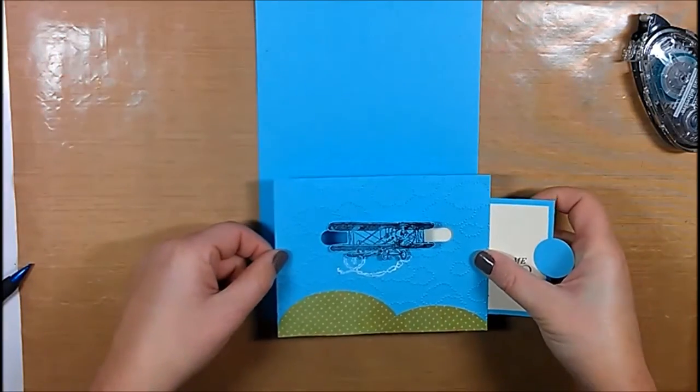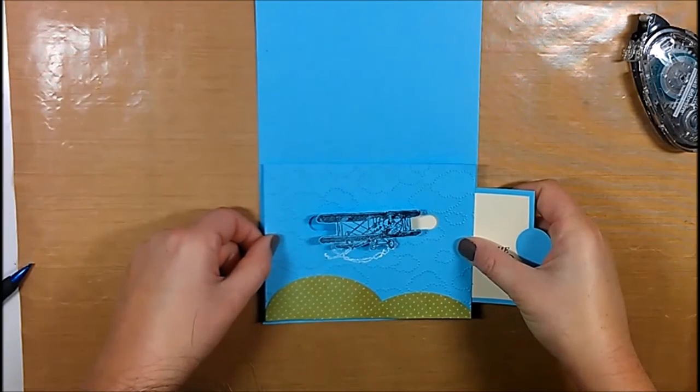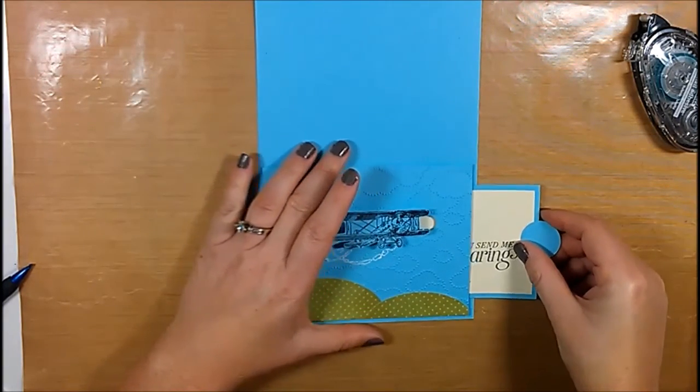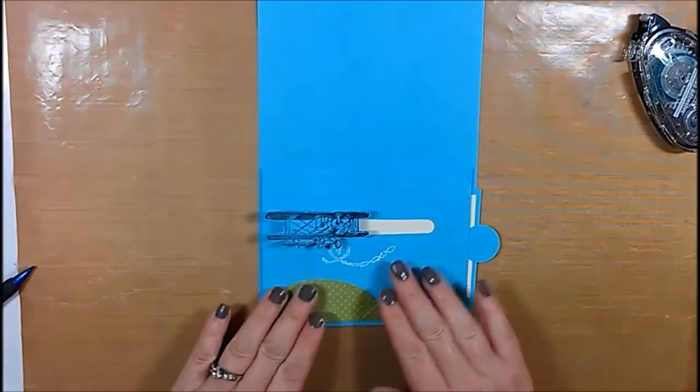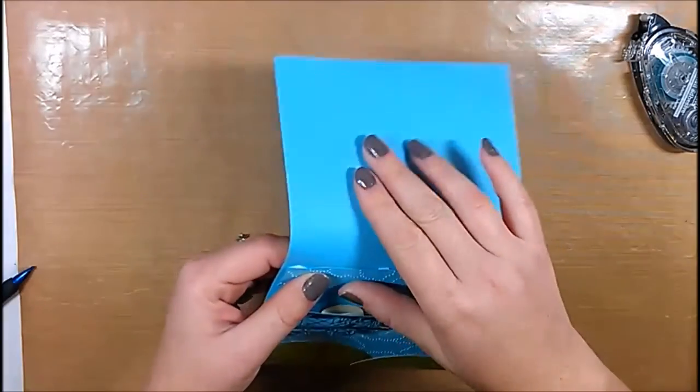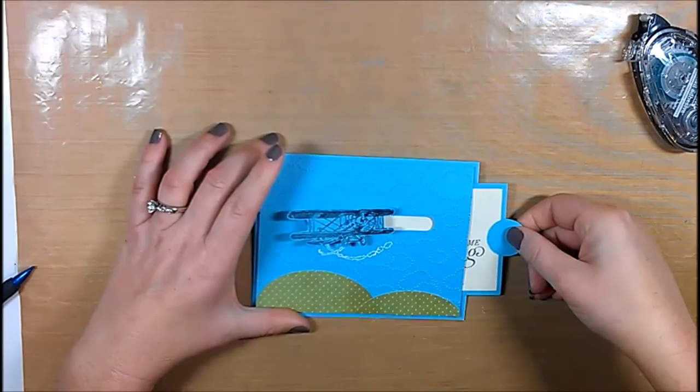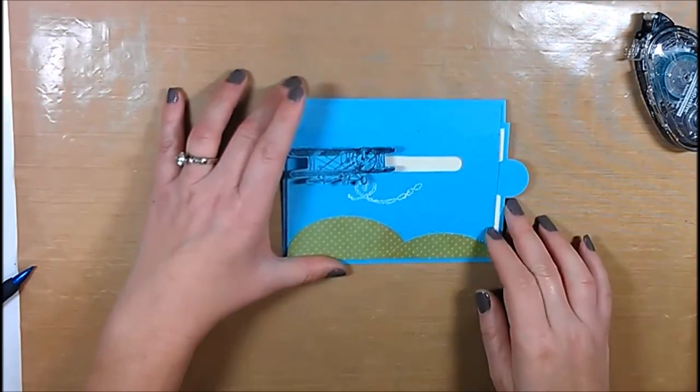And lastly I just adhered the card front to the card base. I just centered it on the card base there. I wanted to check to make sure my slider worked well and it didn't snag up and it slid smoothly. And once I did that I just pushed down on the dimensionals to adhere the card front and folded the card base in half. And that's pretty much it.